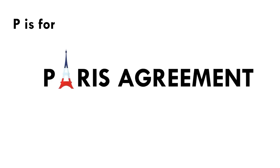P is for palm oil — a widely used vegetable oil found in numerous consumer products. Its production has raised concerns due to deforestation, habitat destruction, and human rights abuses. Sustainable sourcing and certification schemes have been developed to promote responsible palm oil production. P is also for the Paris Agreement — an international treaty aimed at combating climate change by limiting temperature increase to 1.5 degrees Celsius above pre-industrial levels, setting targets for countries to reduce greenhouse gas emissions and support developing nations.